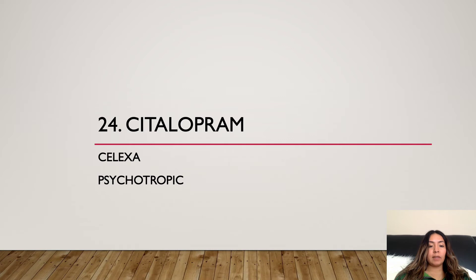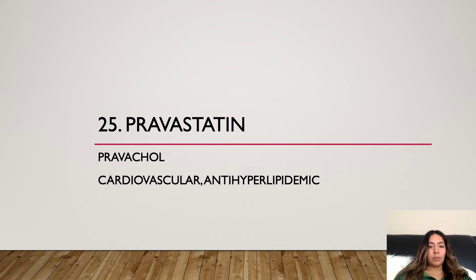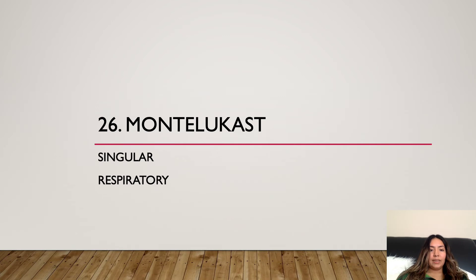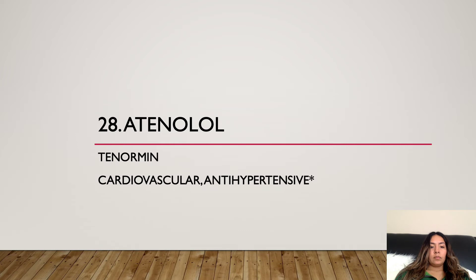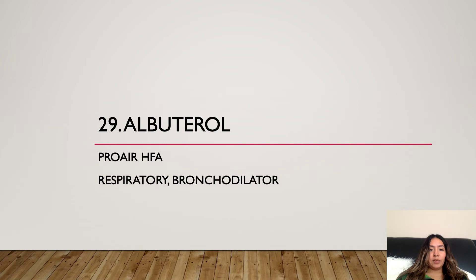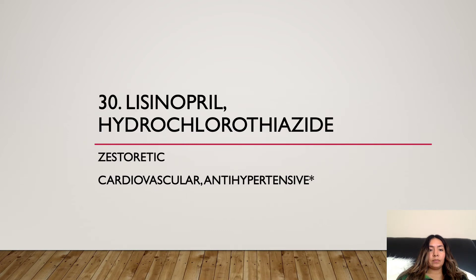Number twenty-three: Zolpidem, brand name Ambien, psychotropic hypnotic. Number twenty-four: Citalopram, brand name Celexa, psychotropic. Number twenty-five: Pravastatin, brand name Pravachol, cardiovascular antihyperlipidemic. Number twenty-six: Montelukast, brand name Singulair, respiratory. Number twenty-seven: Oxycodone/Acetaminophen, brand name Percocet, analgesic opiate. Number twenty-eight: Atenolol, brand name Tenormin, cardiovascular antihypertensive. Number twenty-nine: Albuterol, brand name ProAir HFA, respiratory bronchodilator.